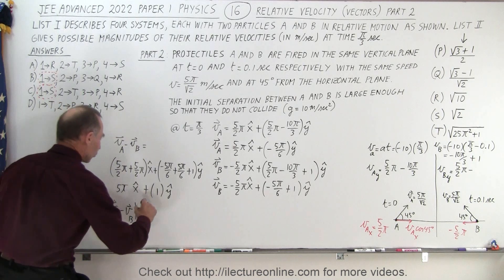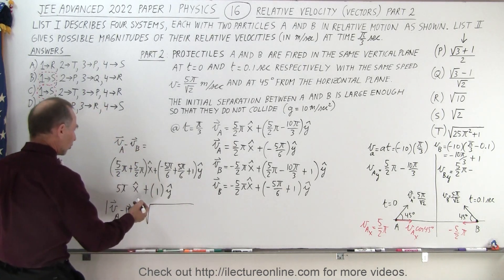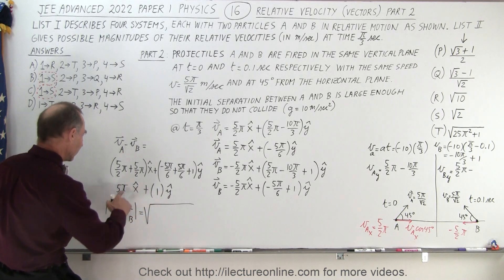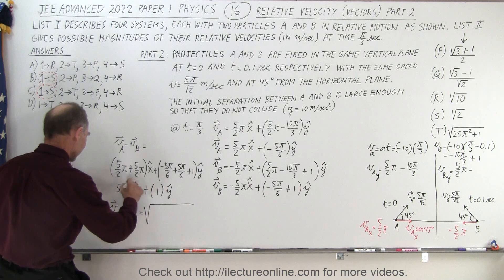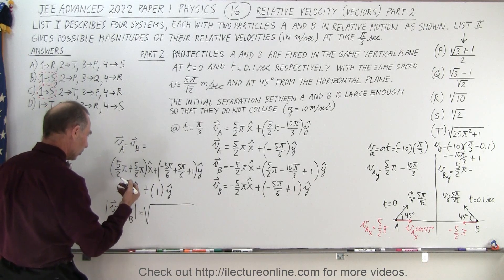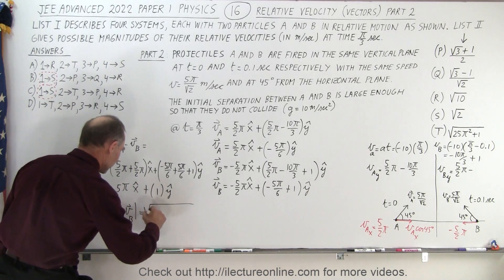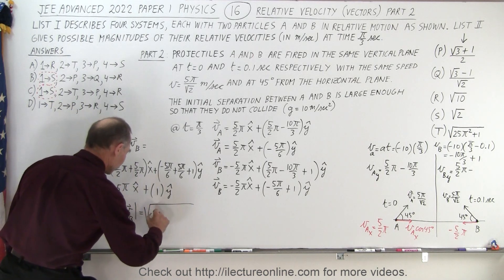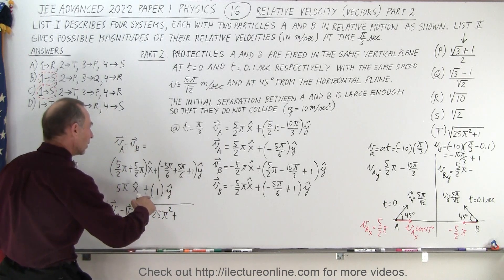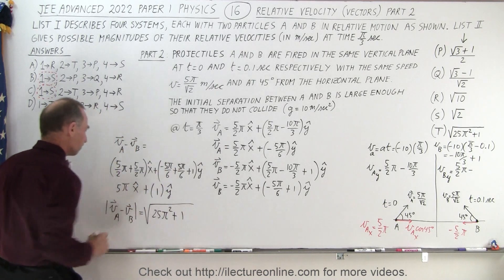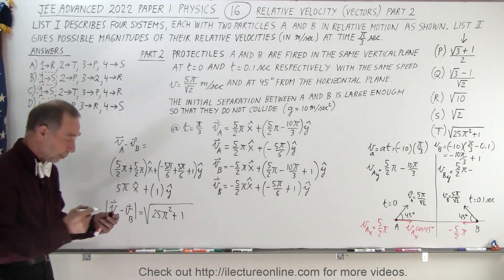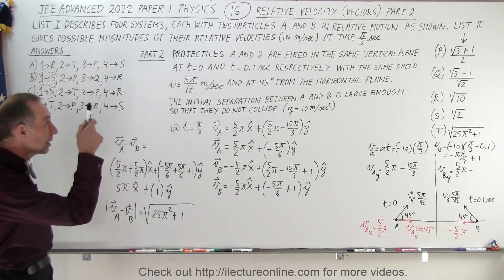The magnitude of the difference is the square root of the sum of the squares: square root of (5π)² plus (1)², which equals the square root of 25π² plus 1. That is the magnitude of the relative velocity.